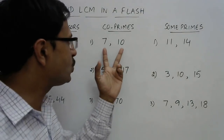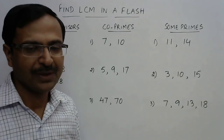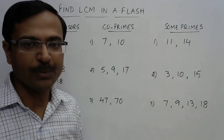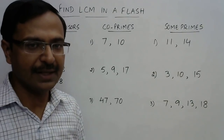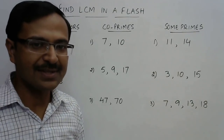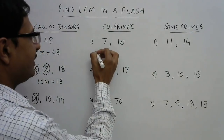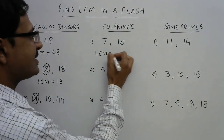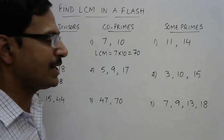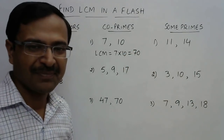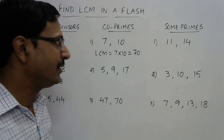Now see 7 and 10. These two numbers do not exist in the table of any number, because their highest common factor is 1 — they are not divisible by any number other than 1. Whenever two numbers are co-prime, their LCM is their product. So the simple answer is 7 × 10 = 70, and you do not need to follow the traditional approach.